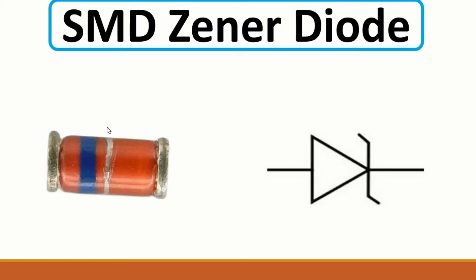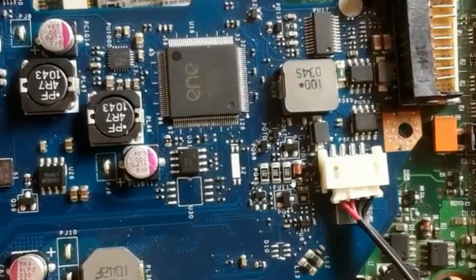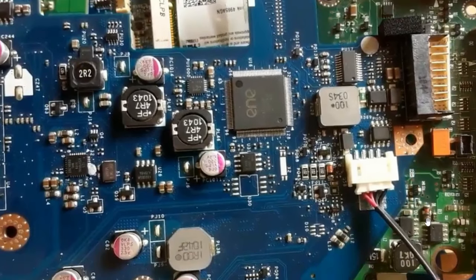The blue line on the component indicates the cathode, corresponding to the cathode in the schematic symbol, and the other side is the anode. Pay attention - you can find some diodes with a black color, like this one on the motherboard. A black-colored diode is a normal diode, while the Zener diode has a blue line.